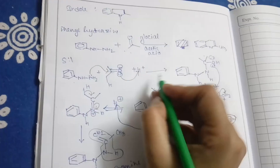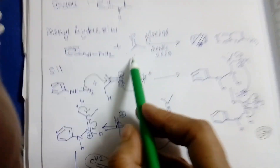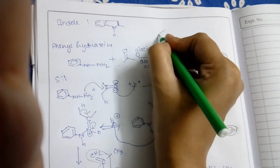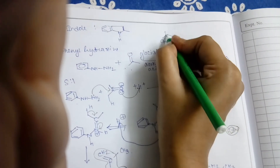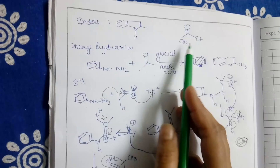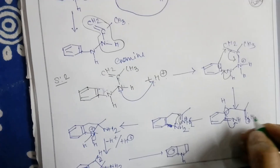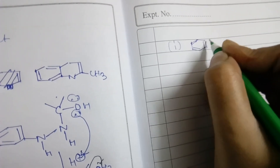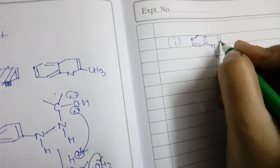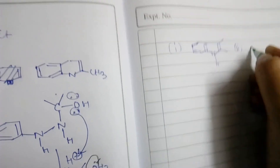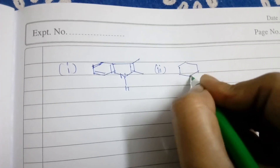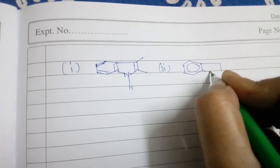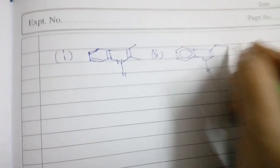Now, if instead of acetone an unsymmetrical carbonyl compound is present — meaning there is an ethyl group on one side and a CH2 on the other side — then two types of compounds will be obtained. One compound will be the kinetically controlled product, which is less stable, and the other will be the thermodynamically controlled product, which is more stable.